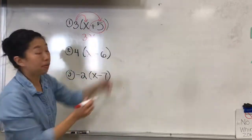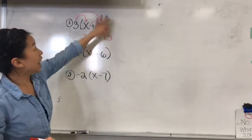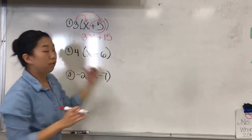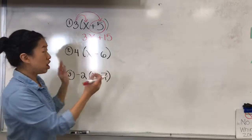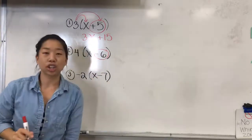So 3 times positive 5 is going to be positive 15, and I have them circle the secondary term so that as we move on and distributive property as the numbers get a little bit trickier, they know that this symbol and this number go together.